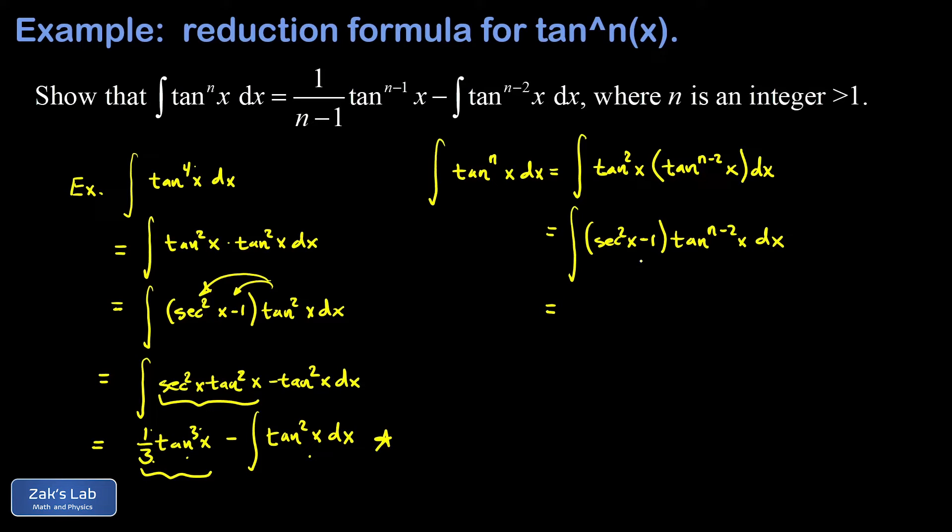And then we distribute the power of tangent to both of these terms. And I end up with an integral of secant squared x. That's the derivative of the tangent function sitting right next to a power of the tangent function. So the chain rule is taken care of on that term.